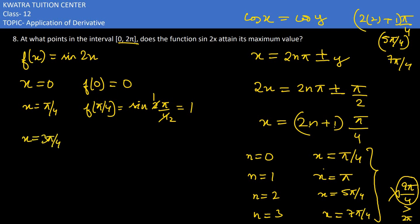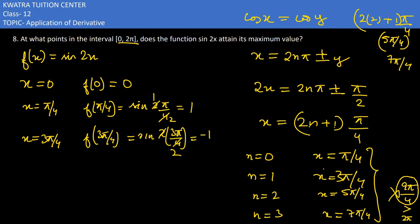At x = 3π/4: f(3π/4) = sin(2 · 3π/4) = sin(3π/2) = −1. At x = 5π/4: f(5π/4) = sin(2 · 5π/4) = sin(5π/2) = 1.